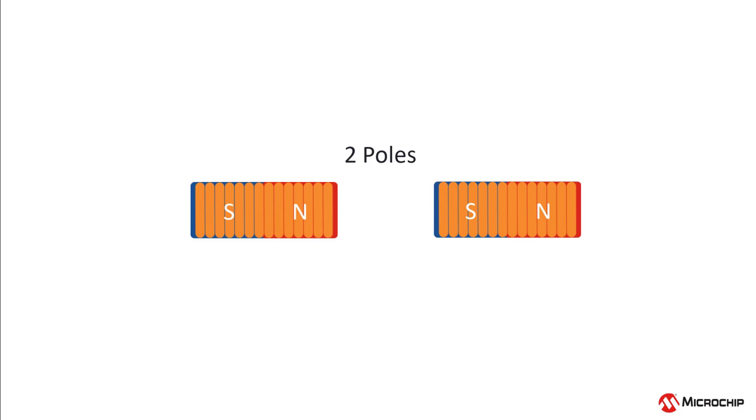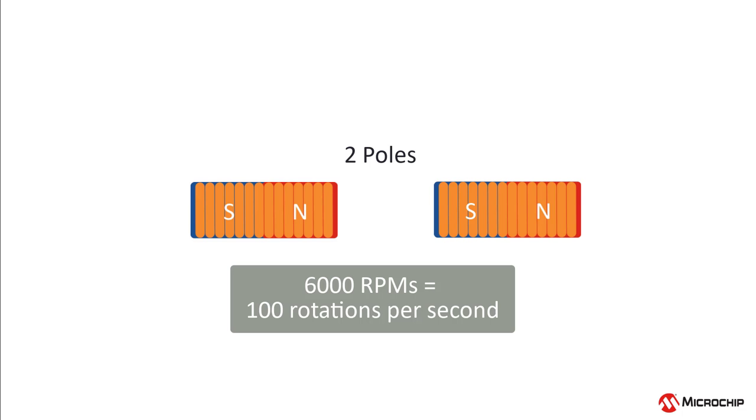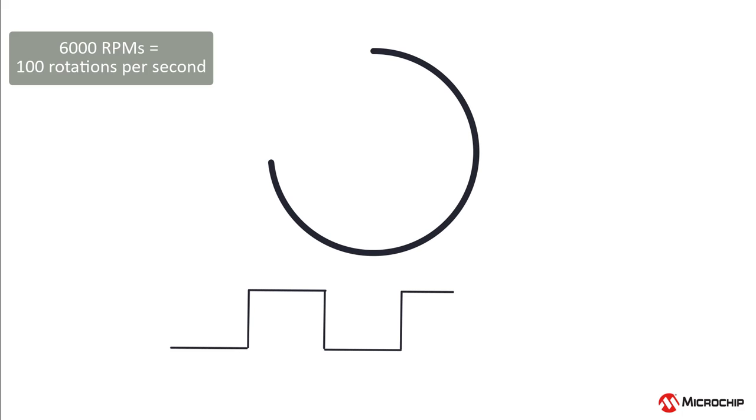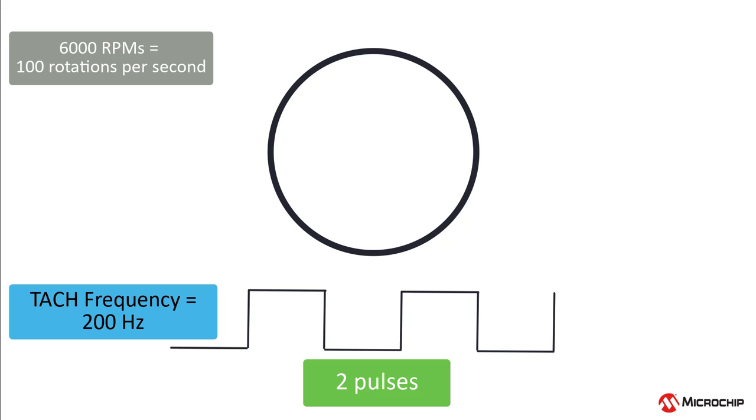Let's consider a two-pole fan going at 6,000 RPMs, which means it will rotate 100 times per second. One rotation would correspond to two pulses of the TAC signal. Therefore, the TAC frequency is 200 Hz. So you can see how the TAC signal gives us a direct picture of the fan speed in the electrical domain.